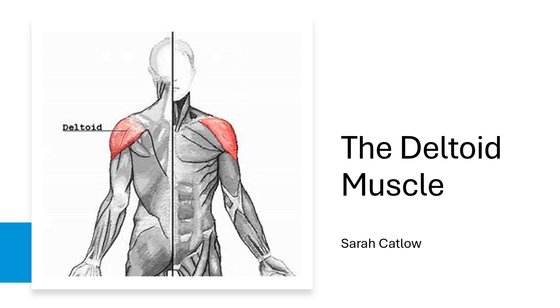Today we're going to look at the deltoid muscle. This is a large triangle-shaped muscle that covers the shoulder. It's named after the Greek letter delta because of its triangle shape.